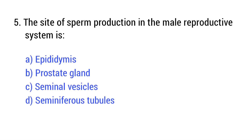Question number 5. The site of sperm production in the male reproductive system is? The right answer is option D: Seminiferous tubules.